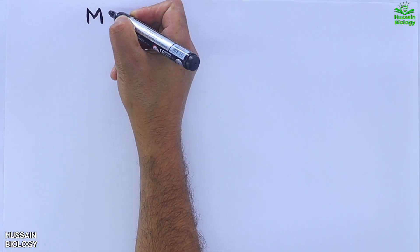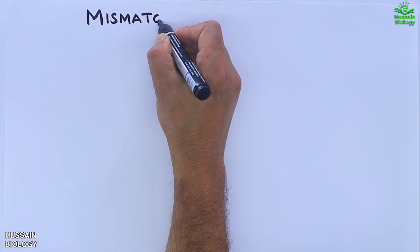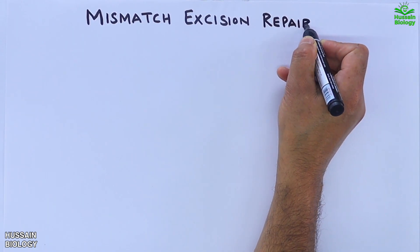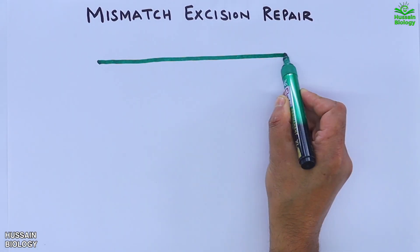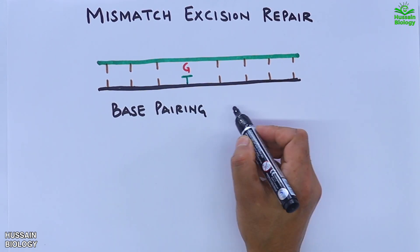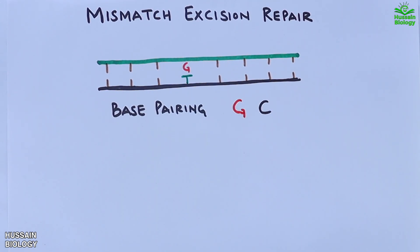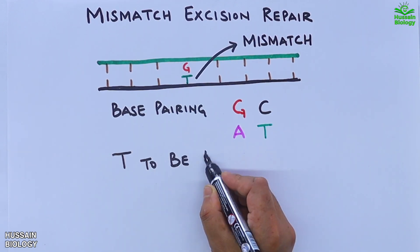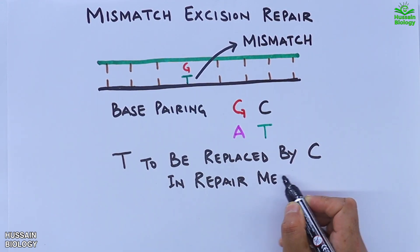In this video we will be discussing the mismatch excision repair in eukaryotes. Here we have a DNA strand with the upper as the parental strand and the lower one the daughter strand. Within this DNA we can see guanine mismatches with thymine. Normally base pairing is guanine with cytosine and adenine with thymine, but here thymine mismatches and needs to be replaced with cytosine in the repair mechanism.